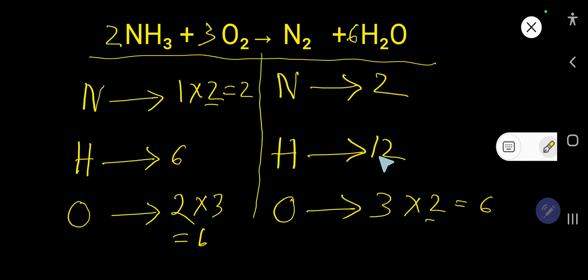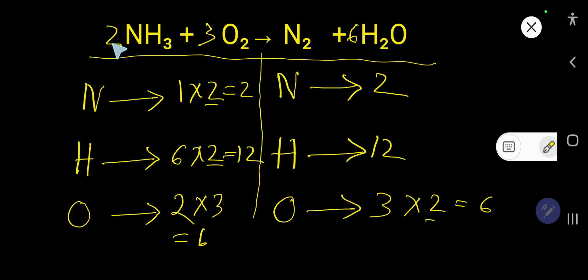Now balance hydrogen again: six H on the left (from NH₃), twelve H on the right. Multiply NH₃ by two — place coefficient 2 before NH₃, making it 2 × 2 = 4. With coefficient 4 on NH₃, the number of nitrogen becomes four. Update nitrogen on the left to four.